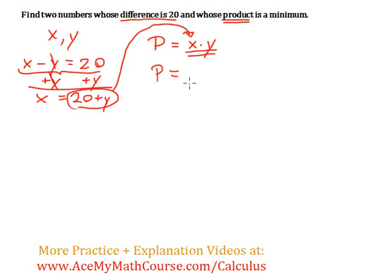So P is going to be equal to 20 plus y times y. Then I can distribute the y, so I get 20y plus y squared. Okay, and remember that our goal is to find the minimum product. So I want to minimize P. And how can I do that?